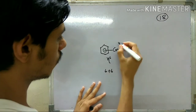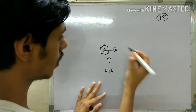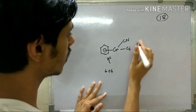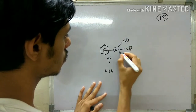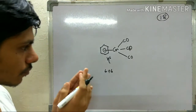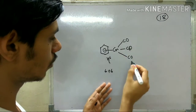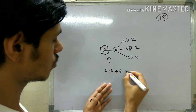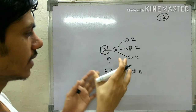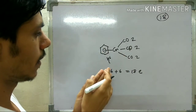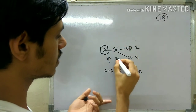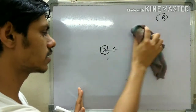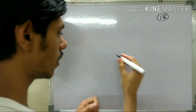Continuing with the chromium example: you now add three carbonyl groups. Each carbonyl contributes two electrons — so two, two, and two makes six — giving a total of 18 electrons. This is why this 18-electron complex is very stable. If you remove one carbonyl, it becomes a 16-electron complex and will not be stable. So whenever you have an 18-electron complex it will be very much stable.